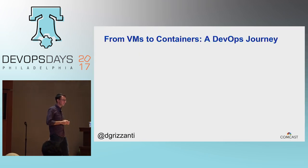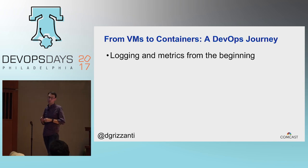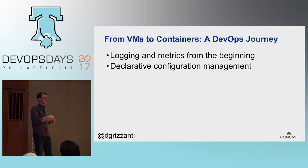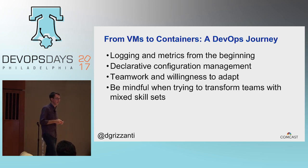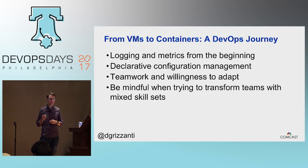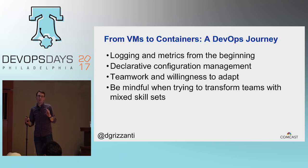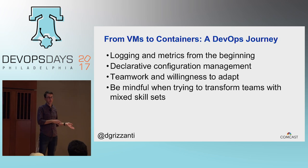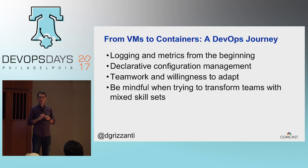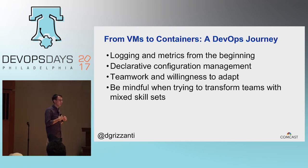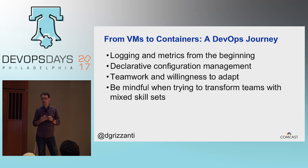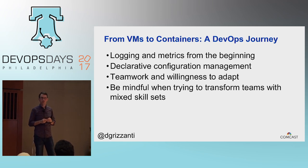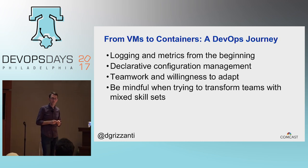Some takeaways: logging metrics from the beginning is definitely something important. Declarative configuration management — this idea of infrastructure as code. Teamwork and willingness to adapt, both from a people and application perspective, and being mindful when trying to transform teams with mixed skill sets. There's a lot of stuff I glossed over — we're building a new greenfield deployment while still having a legacy app with 50 million devices to migrate. We made a lot of code changes to make this more of a platform versus the business logic that was in there before, and we're managing most of the Mesos Marathon infrastructure ourselves. That's it. Thank you.